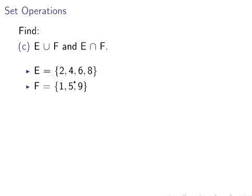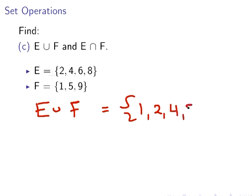The last one is E union F and E intersection F. So we have E union F: let's write them out: {1, 2, 4, 5, 6, 8, 9}. That was straightforward enough considering we've had two examples already.